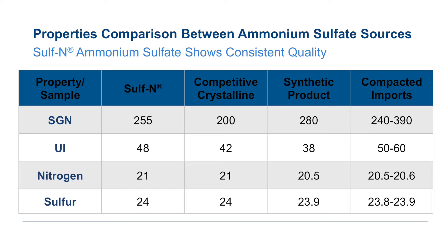Particle size distribution is important when it comes to minimizing product segregation of dry fertilizer blends. To test it, fertilizer producers use the Uniformity Index, or UI. The higher the UI, the greater the number of particles that are close in size to the given SGN.